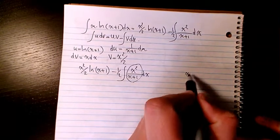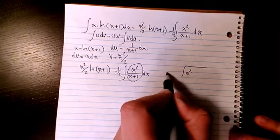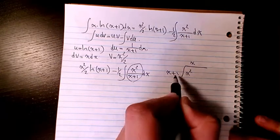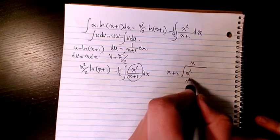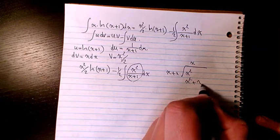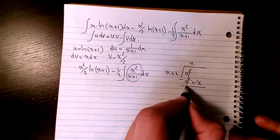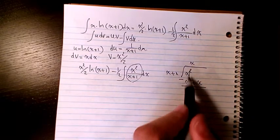So I'm going to divide x squared by (x+1). The first term is x. x times x gives x squared, and x times 1 gives x. When we subtract, the x squared terms cancel to 0, leaving negative x.